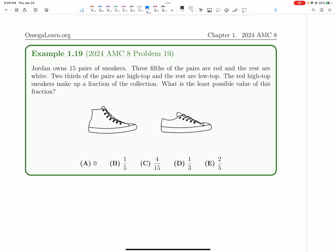Let's now solve this problem from the 2024 AMC8. Jordan owned 15 pairs of sneakers. Three-fifths of them are red, and the rest are white.